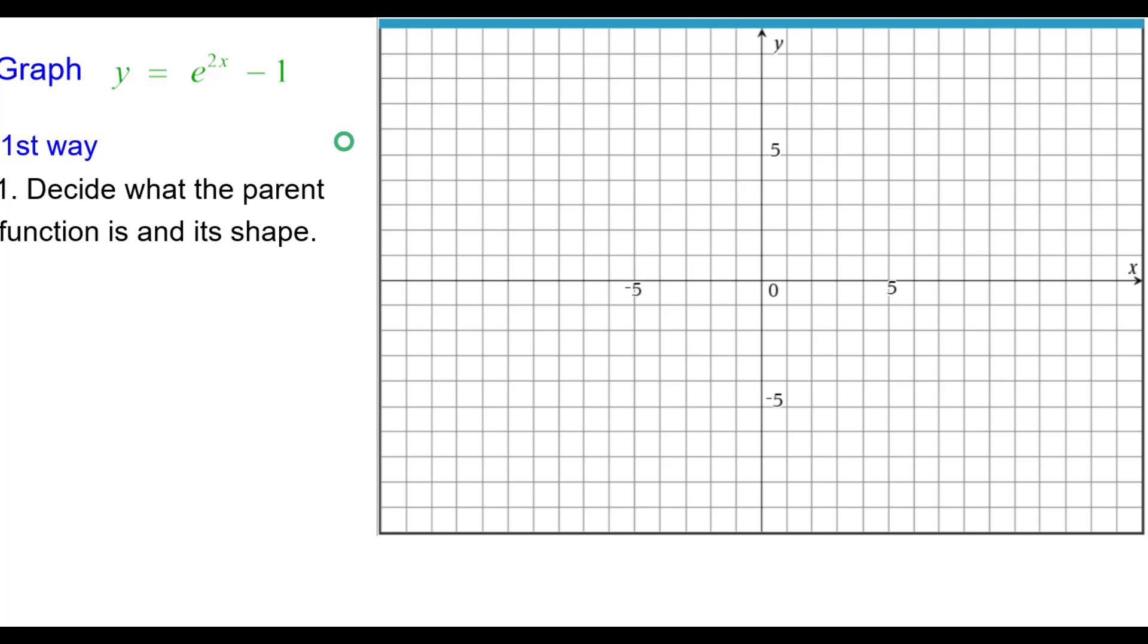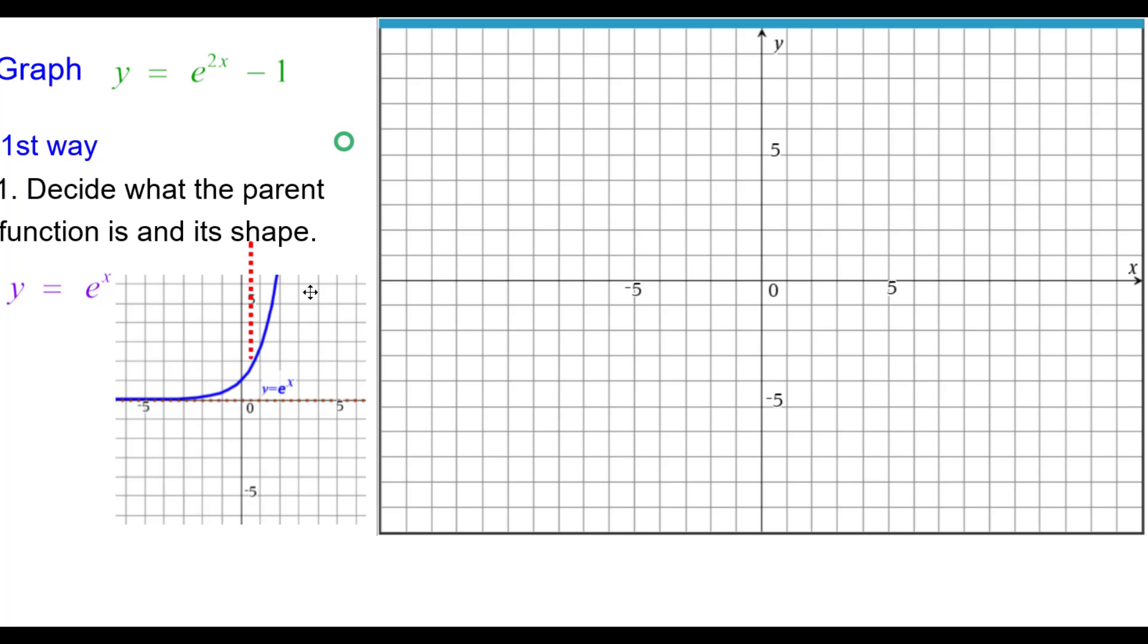First decide what the parent function is and its shape. Parent function is y equals e to the x and its shape is this with an asymptote. I like to refer to it as an easy chair.